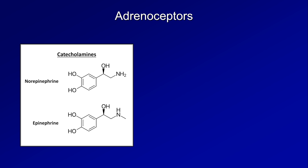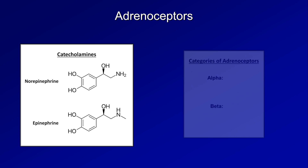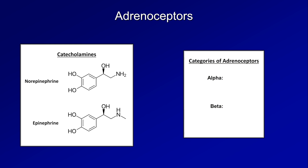There are two major categories of adrenoceptors, called alpha and beta, and each of those have multiple subtypes, which vary in their structure, function, ligand specificity, and location of expression within the body. Within the heart itself, the primary adrenoceptor is the beta-1 receptor.